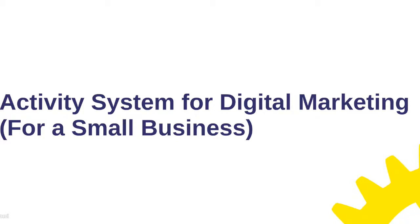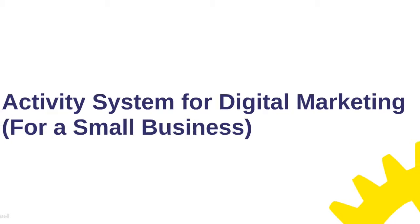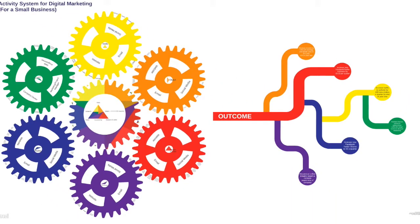Digital marketing is a requirement for any business to reach their target consumer. There are many tactics and planning methods used. Activity theory is a new tool that can be applied to digital marketing. In order to apply activity theory to a digital marketing plan for a small business, I am using a hypothetical business based on one I have worked with — a non-profit and academic consultant working with two other consultants to create their digital marketing plan.